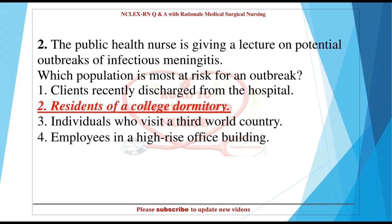Question 2: The public health nurse is giving a lecture on potential outbreaks of infectious meningitis. Which population is most at risk for an outbreak? 1. Clients recently discharged from the hospital. 2. Residents of a college dormitory. 3. Individuals who visit a third-world country. 4. Employees in a high-rise office building.